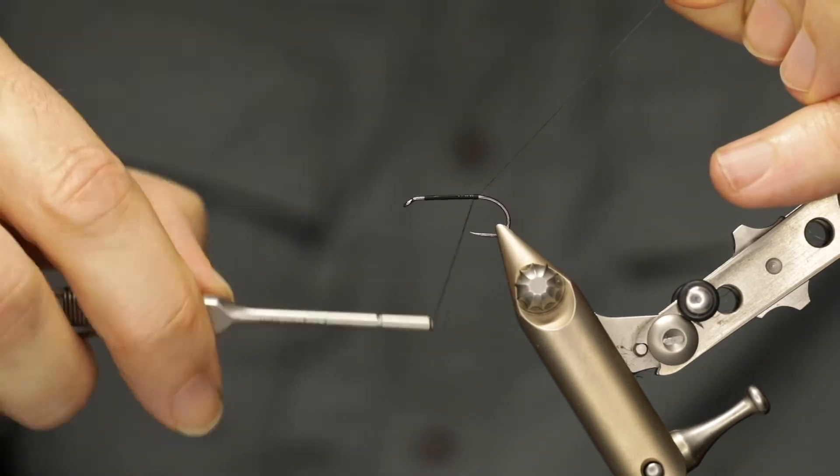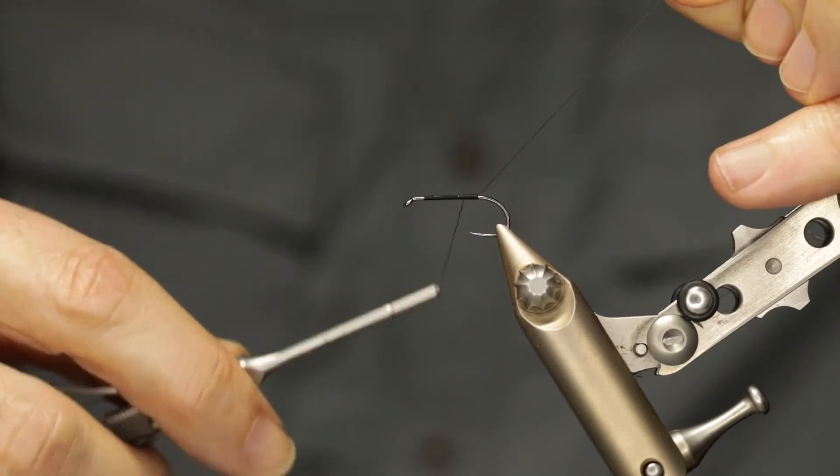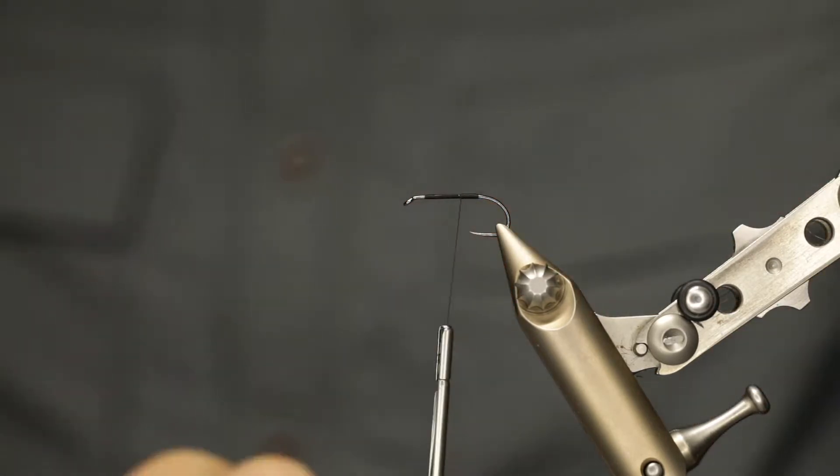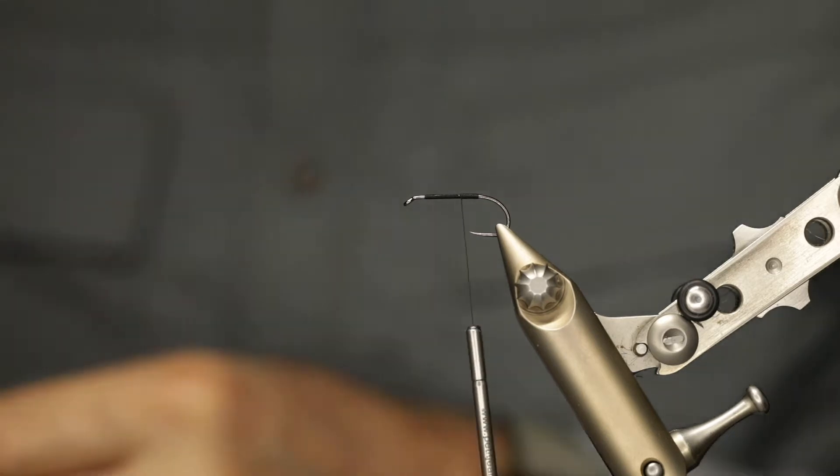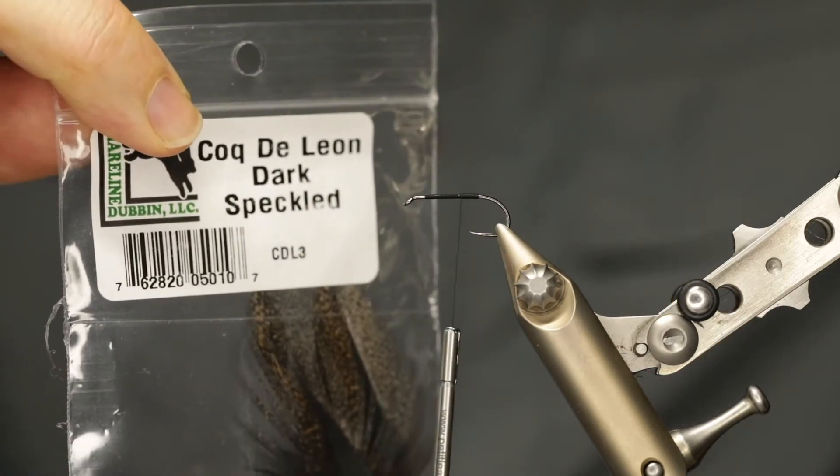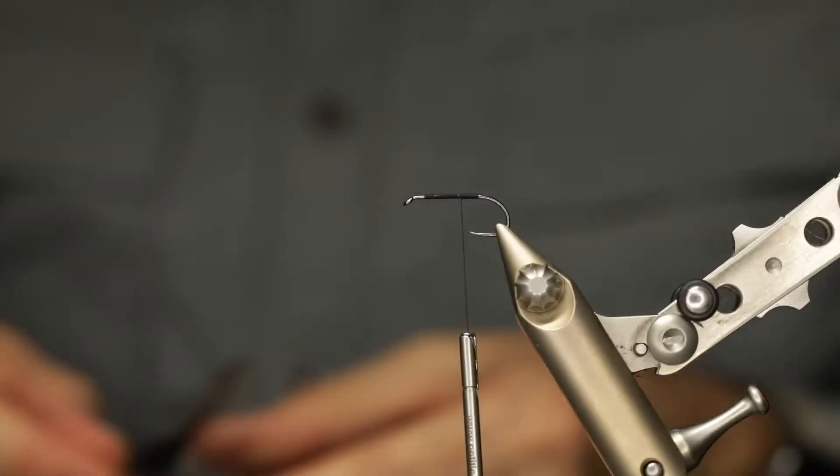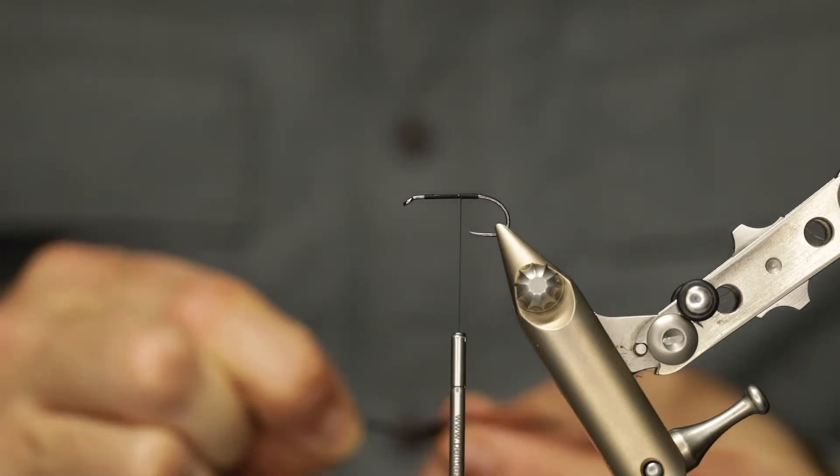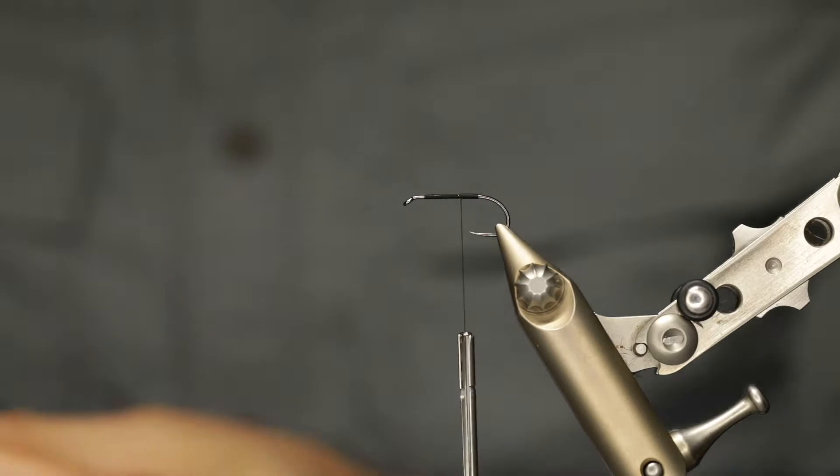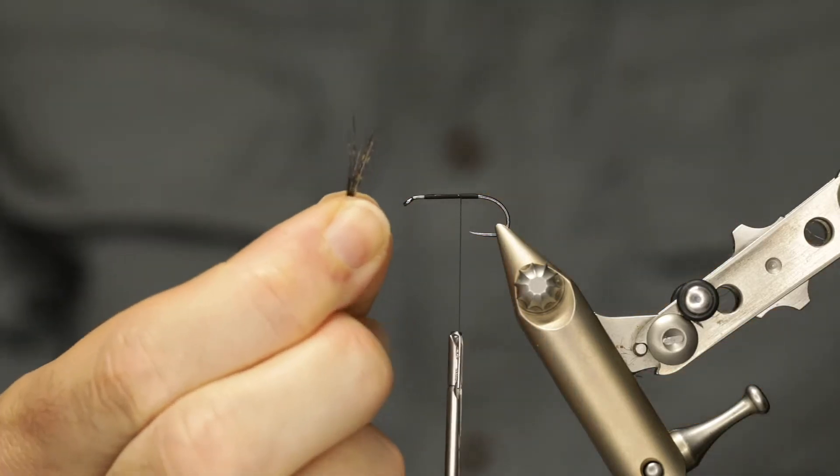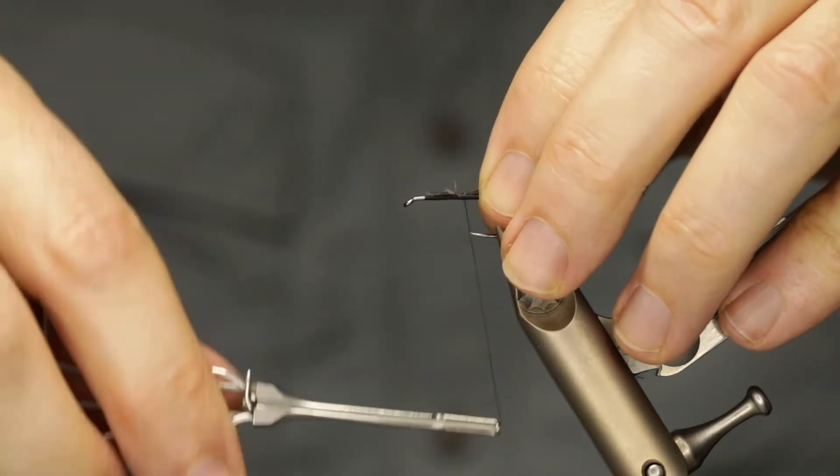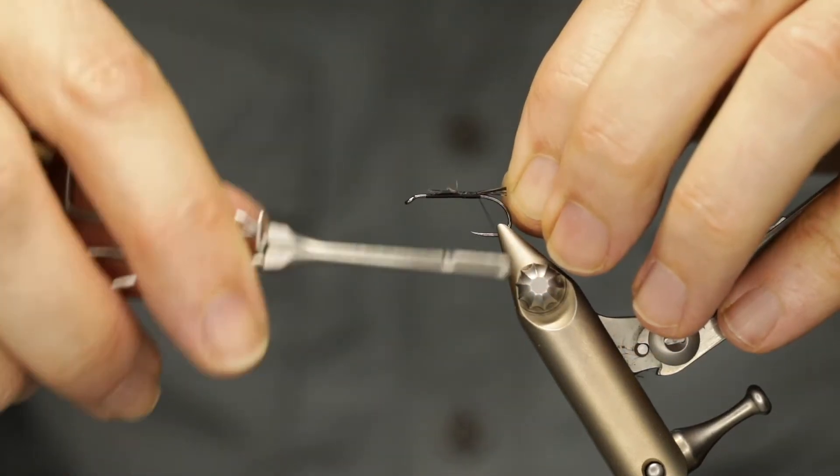Once we've got to the bend of the hook, start going back forwards just to in front of the barb of the hook and trim off the excess. We now need to find some tail material—in this case, cocktail leon dark sparkled. Pull a small section of the feather off and form up our tail. The tail should be around about the length of the body of the fly, so just a quick measure and set the tail in with a first initial wrap and then start wrapping back towards the rear of the fly.